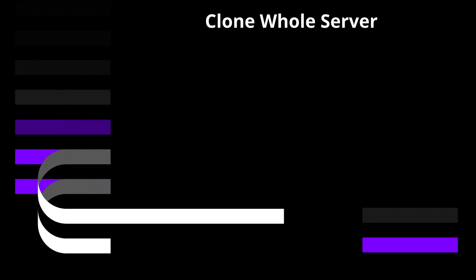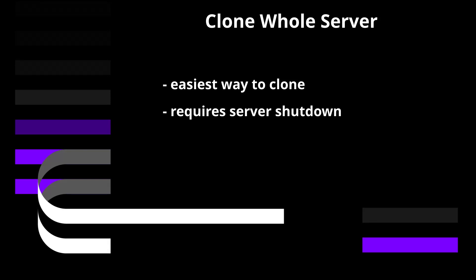Let's start with cloning a whole AppCloud server. This is the easiest and most straightforward way of replicating an existing cloud server. Note, this process requires the server to be shut down while it's being cloned, and the downtime depends on the size of your storage device.